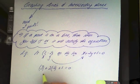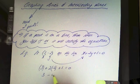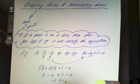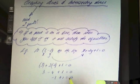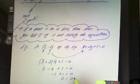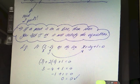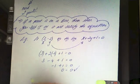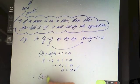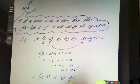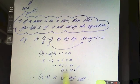Working it out: 3 + 2×(-2) = 3 - 4 = -1, then -1 + 1 = 0, and 0 = 0, which is true. The left hand side equals the right hand side, so therefore (3, -2) is on the line. If it wasn't on the line, the two sides would not be equal.